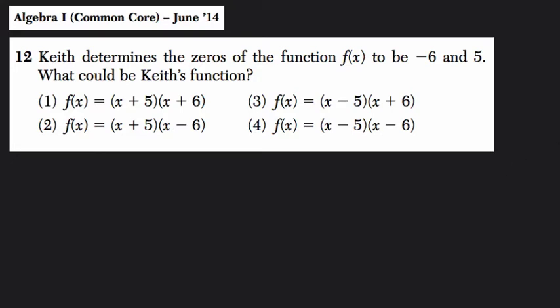All right, so let's start by reading the problem. It says that Keith determines the zeros of the function f(x) to be negative 6 and 5. What could be Keith's function?